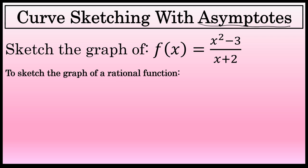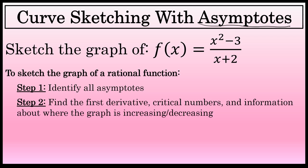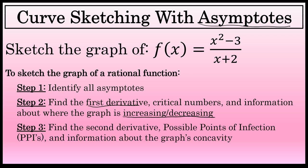Those four steps are: first, identify what the asymptotes are. After identifying the asymptotes, you'll find the first derivative, and that will give you information about where the function's graph is increasing and decreasing. Then comes the second derivative, which gives a lot of information about the graph's concavity.